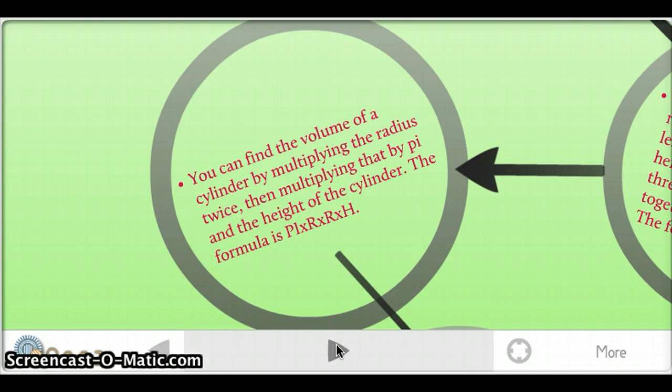You can find the volume of a cylinder by multiplying the radius twice and then multiplying that by pi and the height of the cylinder.